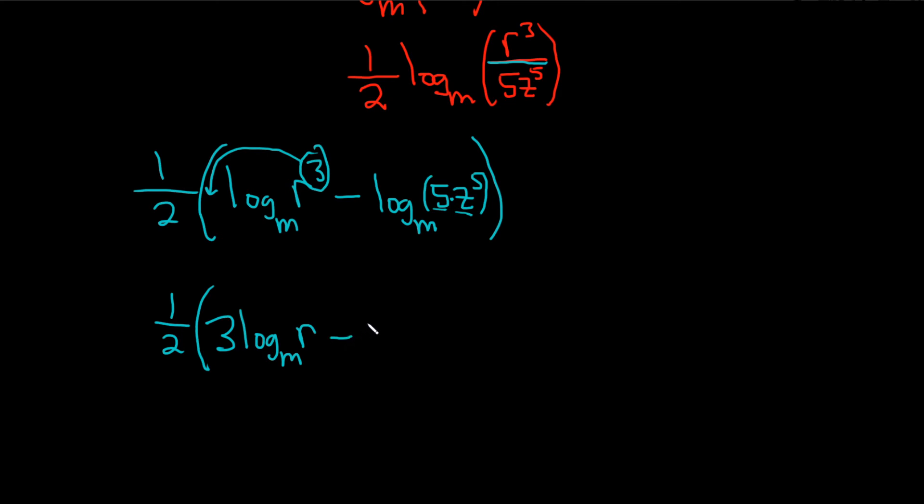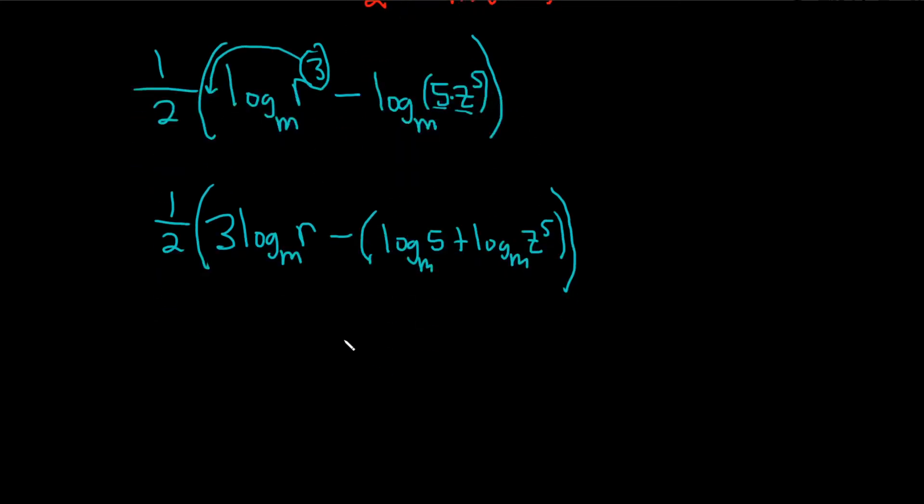So it's minus parentheses, this is going to become 2 log, so the parentheses is important. Log base m of the first factor, so 5, plus, and then because it's times, so it becomes plus, log base m of the second factor, z to the 5, and then parentheses, 2 parentheses, 1 to close this one, and then this is the outer parentheses. Pretty intense problem.